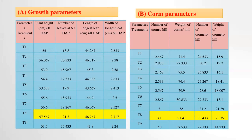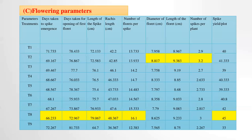For corm parameters — number of corm sprouts and weight of corm sprouts — good results were obtained in treatment T8. In T8, the combination used was humic acid 5 ml per liter and natural seaweed extract 5 ml per liter.